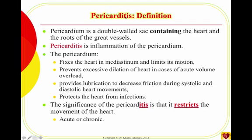When this protective sac becomes inflamed, it will restrict the heart movement. The larger the inflammation, the more restriction it will impose on the heart. It can be acute or chronic, depending on the etiology. Think of it as the coat of the heart — if this coat becomes very thick, very inflamed and hard, it will restrict the movement of the heart, mainly during systole. The preload will be low, cardiac output will be low as a result of low ejection fraction, and heart sounds will also be muffled.